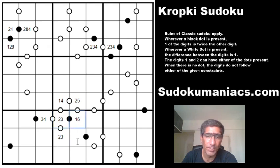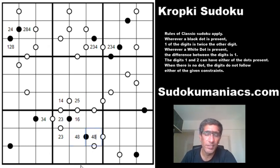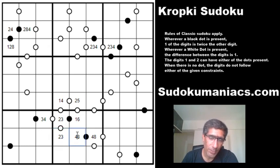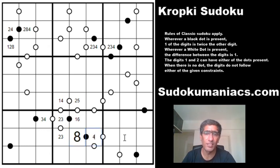Moving on to the next black dot in this box: 2 and 3 are already blocked in column 4, rows 7 and 8. So we cannot have 1 and 2, cannot have 2 and 4, and neither can we have 3 and 6. So we know for sure this has to be 4 and 8. To determine which digit goes in R8C5, we look at the adjacent 2-3 pair: 2 and 4 share a 1:2 ratio but there is no black dot here, so if this is a 2, we cannot have a 4. And 3 and 4 are consecutive but there is no white dot either. So irrespective of whether 2 or 3 comes here, we cannot have 4 in that cell. Therefore this must be 8 and the other becomes 4.